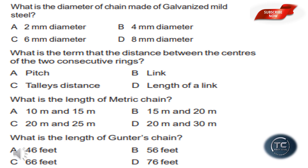What is the length of the metric chain? The options are 10m and 15m, 50m and 20m, 20m and 25m, or 20m and 30m. The answer is option D: 20 meter and 30 meter.